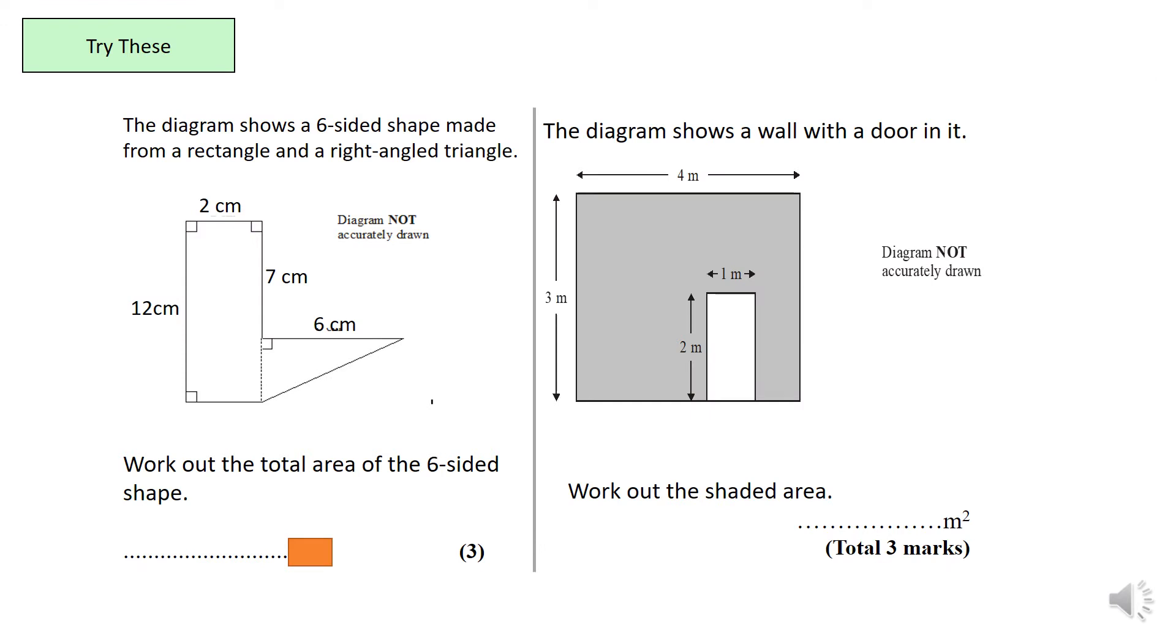Now, what I want you guys to do is try both of these questions. If you look at the question on the right, it's very similar to the one we've just done. And the question on your left is an area of a compound shape, but I've done the split for you and instead of having an L shape, we've got a triangle and a rectangle together. Can I ask you guys to pause the video now and have a go at these two questions?